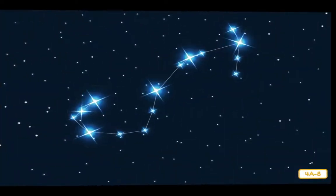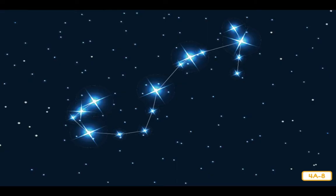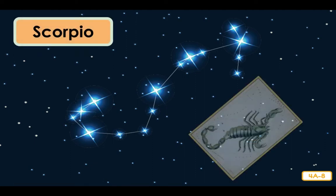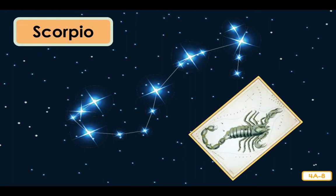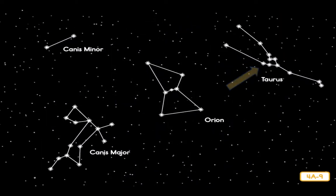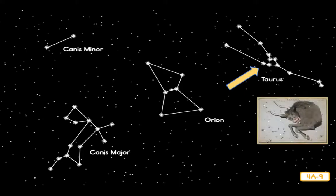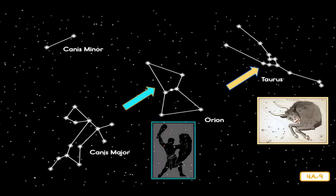According to one myth, Orion bragged he was such a good hunter that he could kill all the animals on Earth. The gods decided to punish him by creating Scorpio, a giant scorpion that Orion could not defeat. Not far from the Orion constellation is Taurus, which shows the head and horns of a mighty bull. It is often said that the hunter Orion is fighting the bull Taurus.